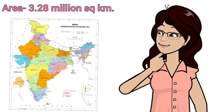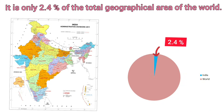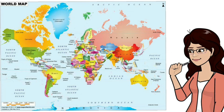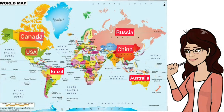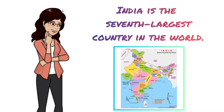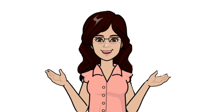It is only 2.4 percent of the total geographical area of the world. This seems a very small percentage, but compared to other countries of the world it is very large. Although smaller than Russia, Canada, USA, China, Brazil, and Australia in that order, it means that it is the seventh largest country in the world.